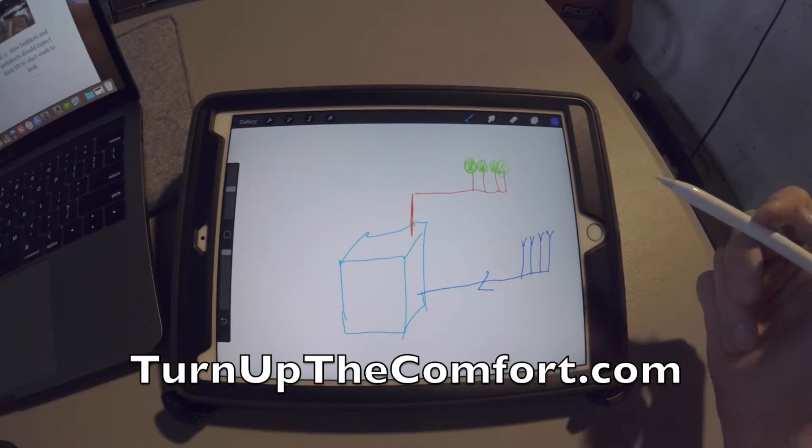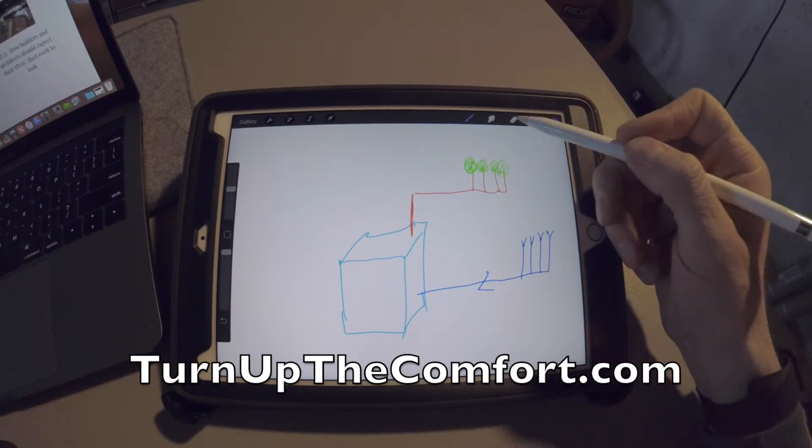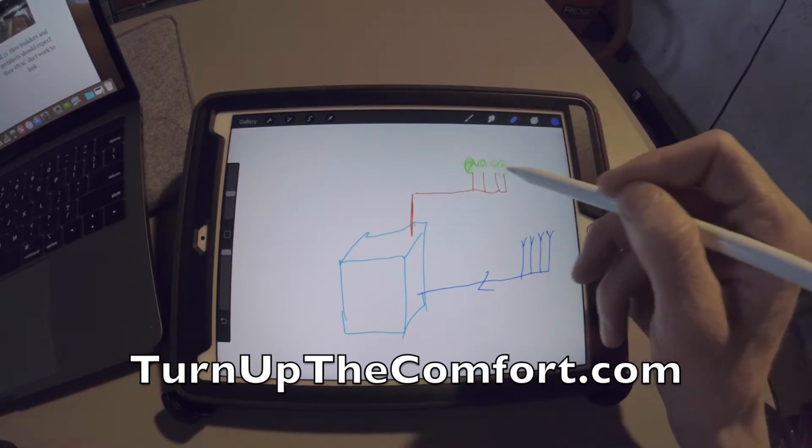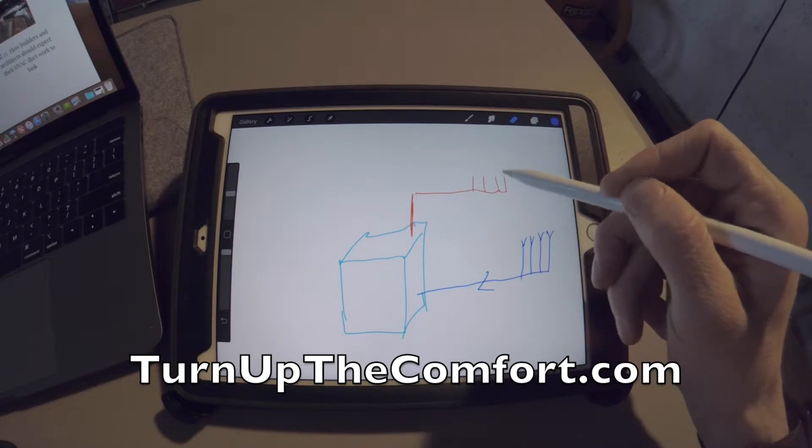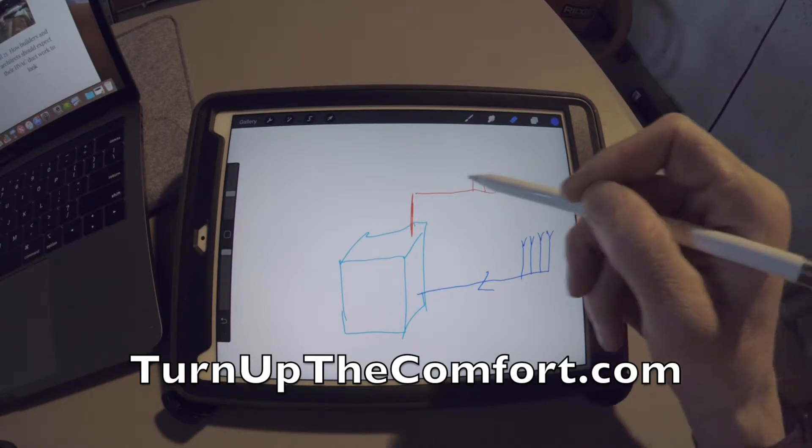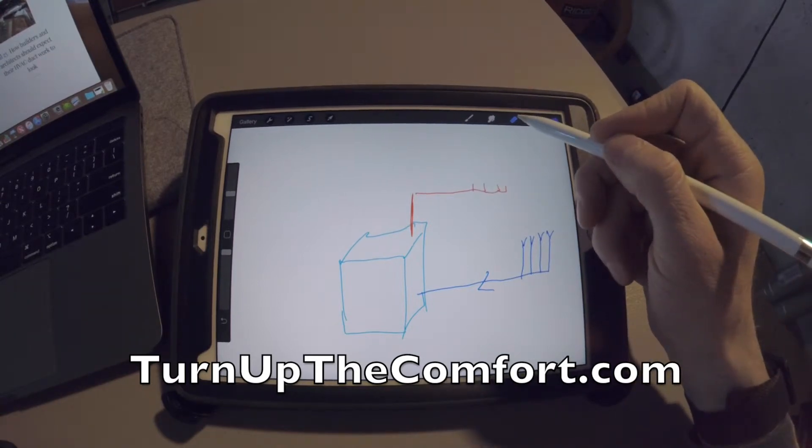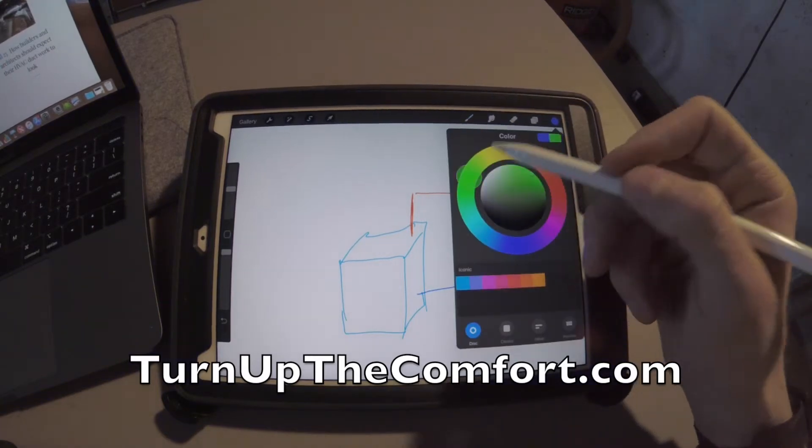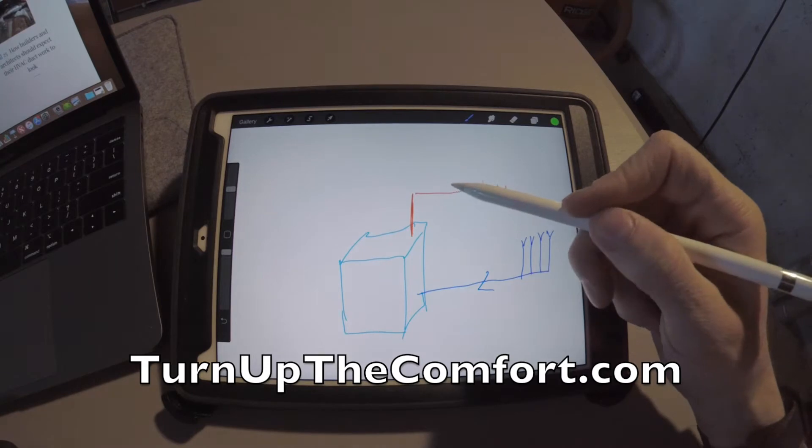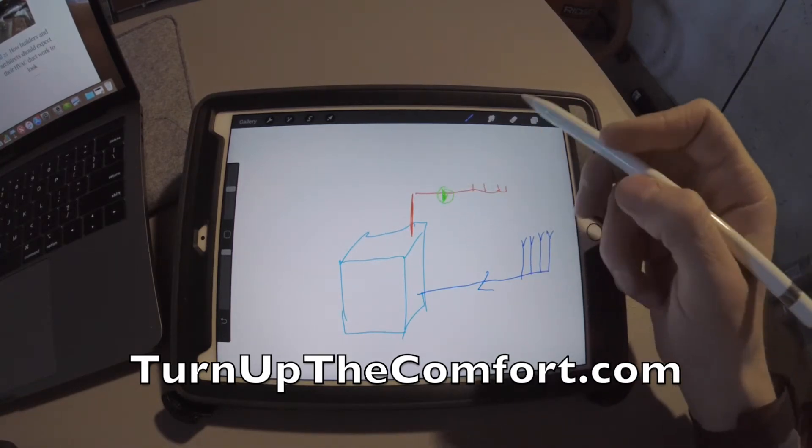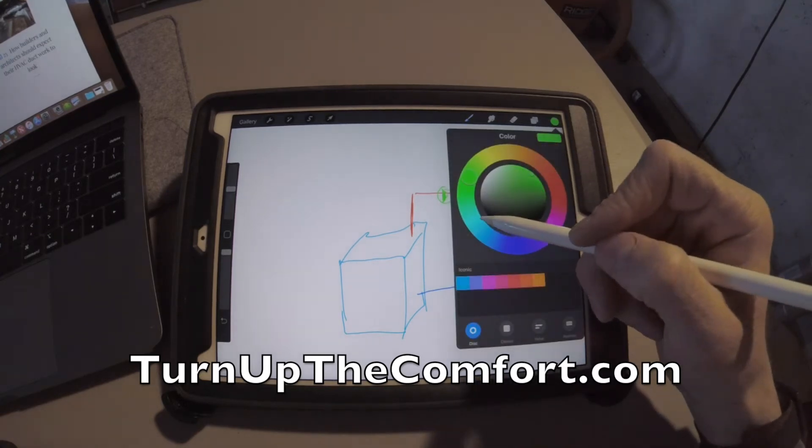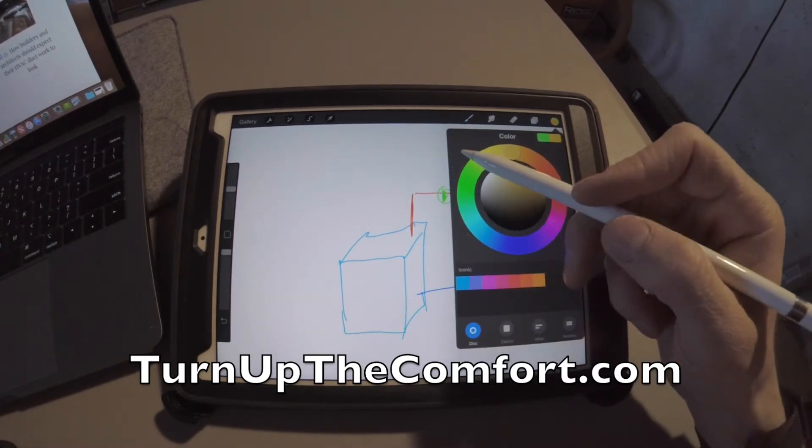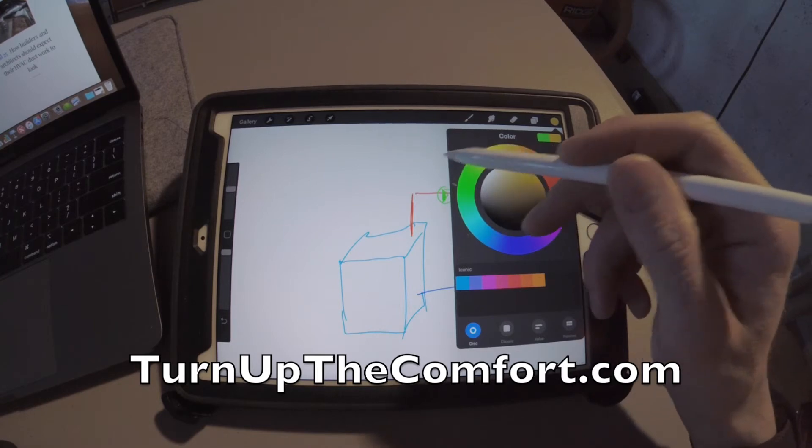Now if you take this exact same idea and we change it up a bit, go ahead and put one single pump and put multiple zone valves. So we'll use an orange or yellow for the zone valves.